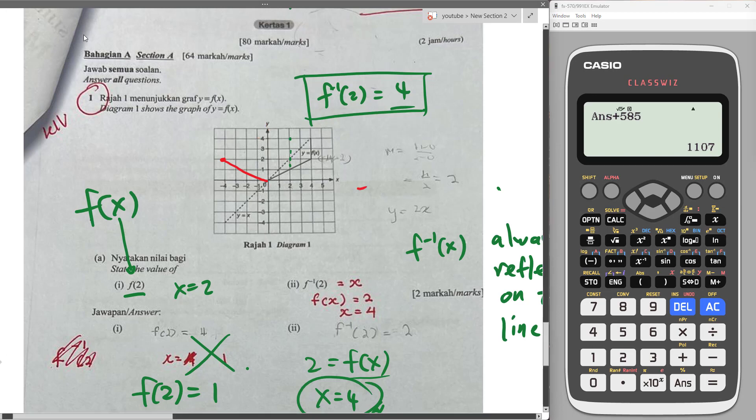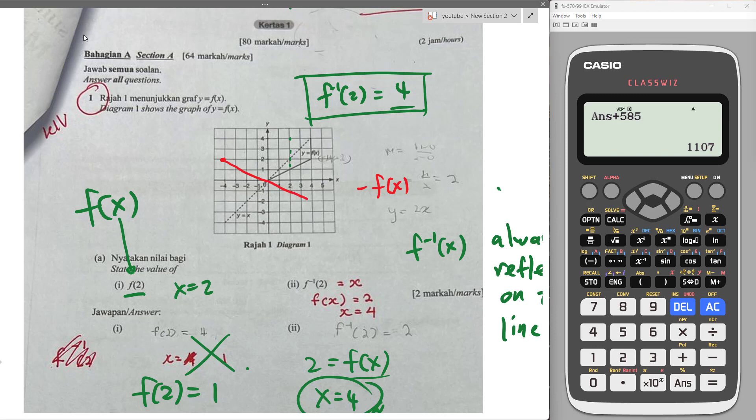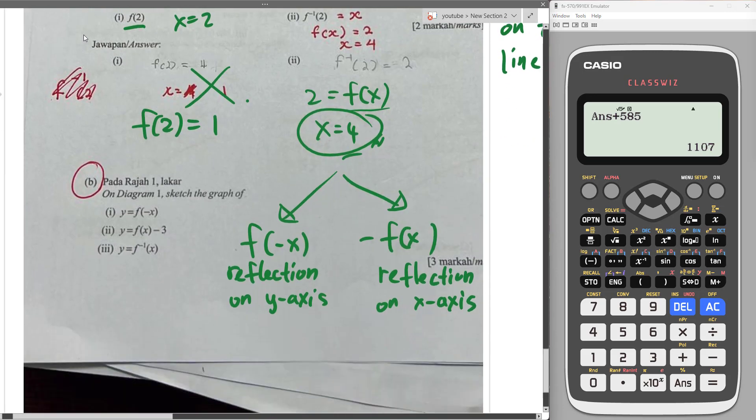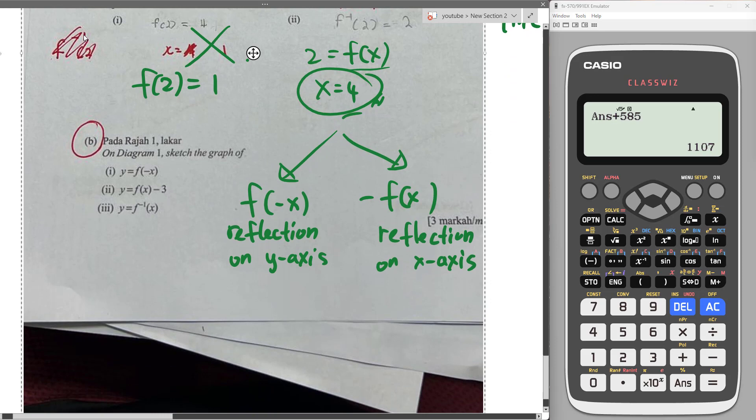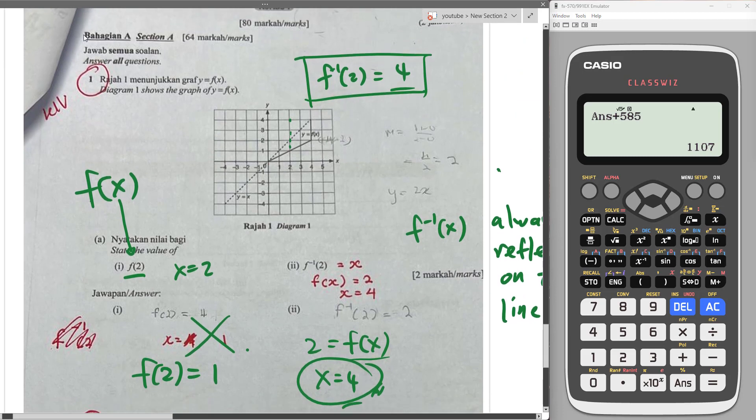So if today they ask me to draw negative f(x), then I will do reflection on the x-axis. Okay, this one is the negative f(x). Okay, then next is they ask us to draw f(x) minus 3. This one minus 3 does just mean the whole f(x) graph is going down 3 unit. So you can see this one. You can imagine this point going down 3 unit. 1, 2, 3. This point now is here.